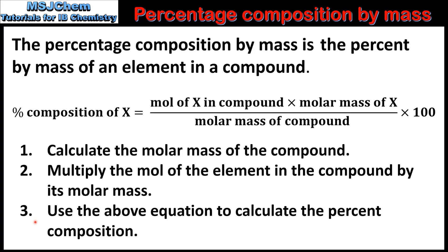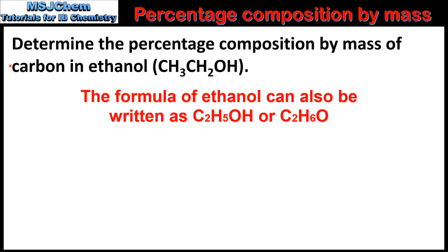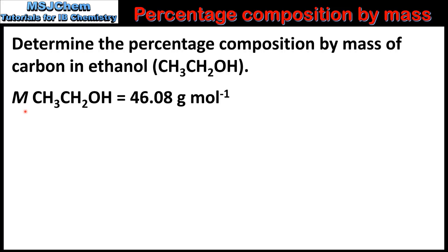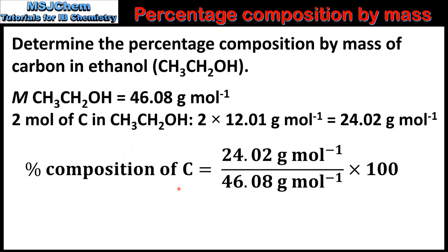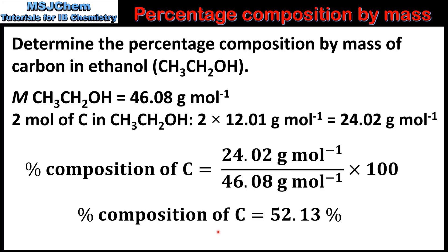In our first example we'll determine the percentage composition by mass of carbon in ethanol. The first step is to calculate the molar mass of ethanol, which is 46.08 grams per mole. There are 2 moles of carbon in 1 mole of ethanol, so we multiply the molar mass of carbon by 2, which gives us 24.02 grams per mole. Using the equation, the percentage composition of carbon is 24.02 divided by 46.08 multiplied by 100, which gives us 52.13%.